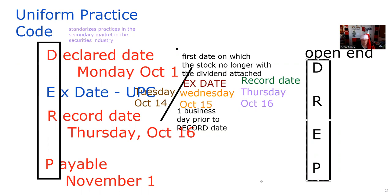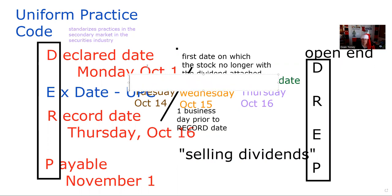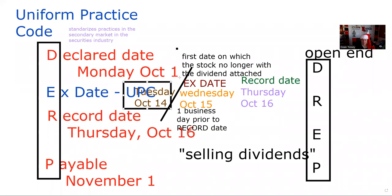Remember, you're not supposed to use the X date as an artifice — meaning an artificial sense of urgency. Selling dividends using this process is a big no-no. For example, saying 'if you buy the stock today, Tuesday October 14th, you get the dividend, but if you wait till Wednesday, no dividend for you' — that creates artificial urgency. The stock is going down by the amount of the dividend anyway, so you'd be better served to buy on the X date and avoid an unnecessary tax situation.